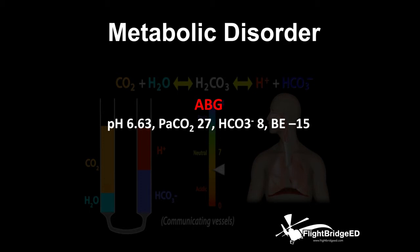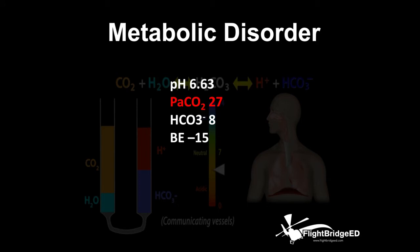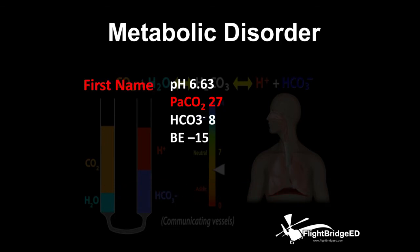Now let's define and look at this metabolic disorder. The pH of 6.63 is a significantly low pH. PaCO2 of 27, bicarb of 8, base excess of negative 15. We're going to teach this using the first-middle-last name methodology. The first name is simple: either compensated — pH falls between 7.35 and 7.45 — or uncompensated, meaning the pH falls outside that range. Our first name here is uncompensated because it falls outside 7.35 to 7.45. Next, the last name is also derived from the pH. A perfect pH is 7.4: if pH is less than 7.4, we're showing acidosis; if greater than 7.4, alkalosis. We're less than 7.4, so our last name is acidosis.